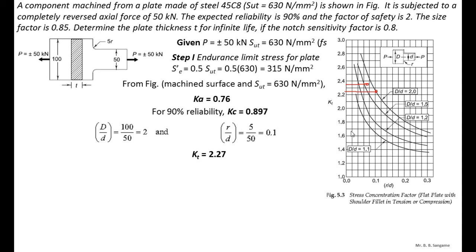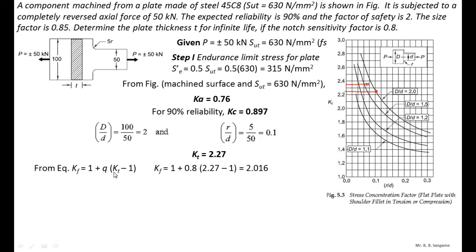From the equation Kf = 1 + q(Kt − 1), with q = 0.8 and Kt = 2.27, we calculate Kf = 2.016. Then Kd = 1/Kf = 0.496.